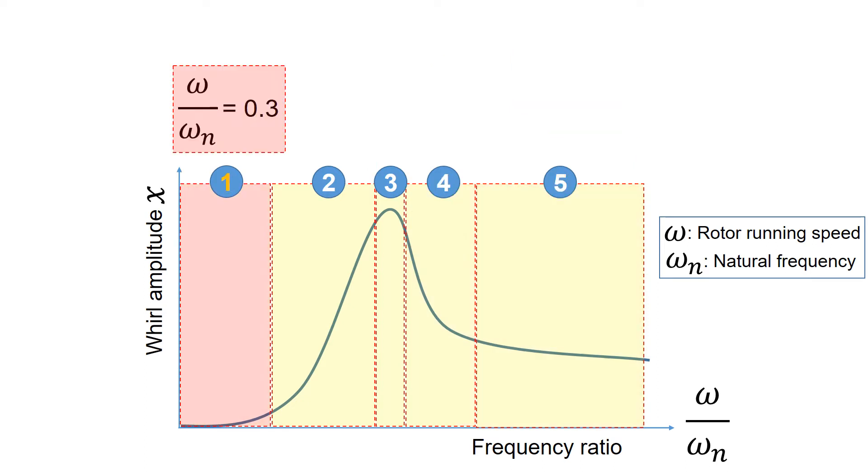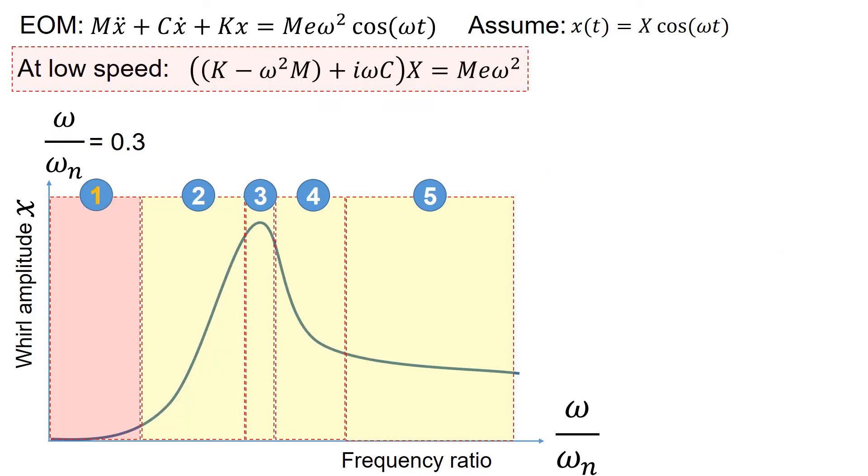Let's look into the area of interest number 1. At this condition, let's assume that the frequency ratio is 0.3. At this condition, the running speed omega is small. That means you could simplify the equation as highlighted in the red box.